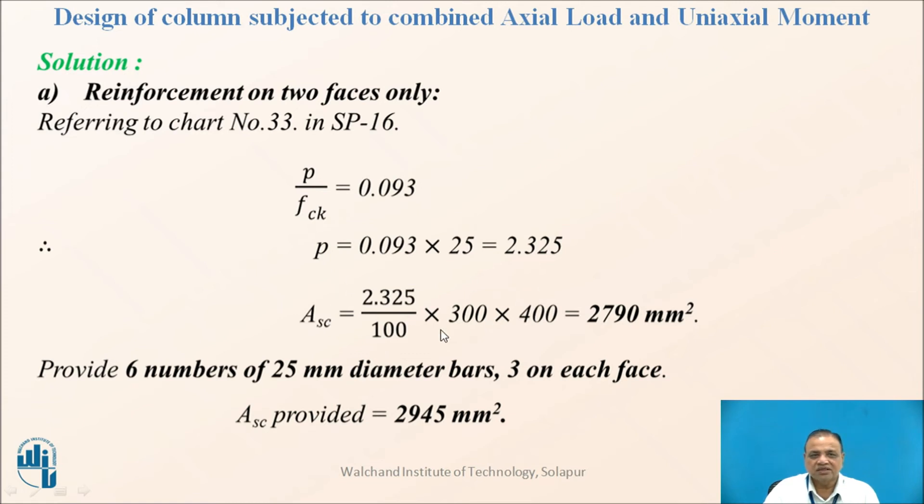P is the percentage steel, therefore if you just calculate the percentage steel it works out to be 2790 mm square. Provide six number of 25 mm diameter bars, three on each face. ASC provided is 2945 which is greater than required.